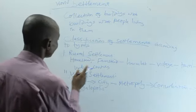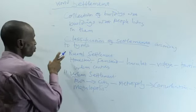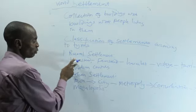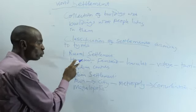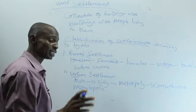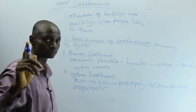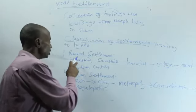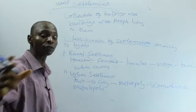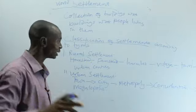Under rural settlement, it started from homestead — a settlement that has only one man and his wife. Then this homestead can graduate to a farmstead, where people move to farm and settle. It can be two or three people, but they are scattered.